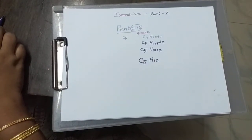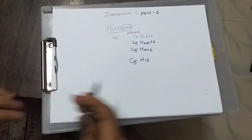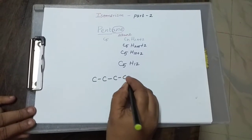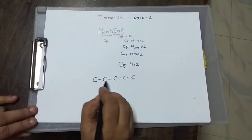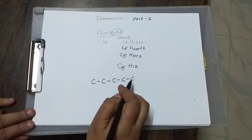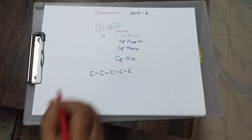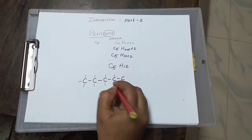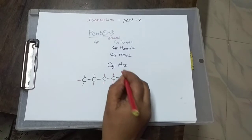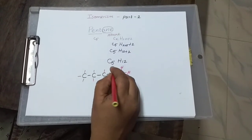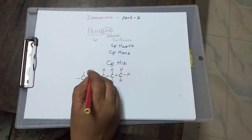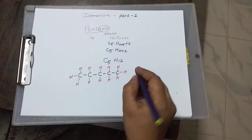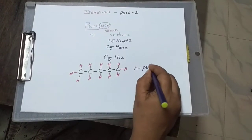We will try to write isomers for pentane. The first isomer is with a straight chain — 5 carbons linked by single bonds. All carbons have a valency of 4, so we complete the remaining bonds with hydrogen. The total number of hydrogens is 12. As it is a straight chain, it is called normal pentane, or n-pentane.